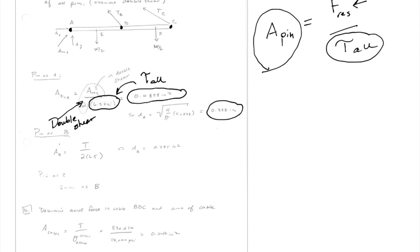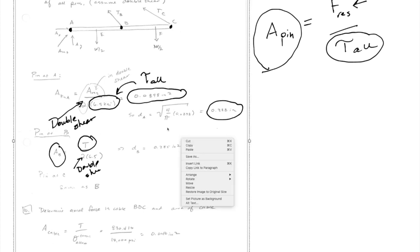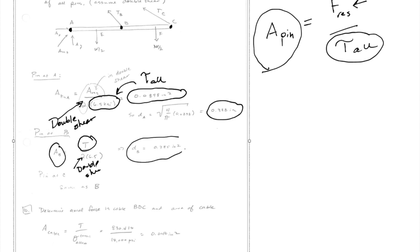Pin at B is very similar. The cross-sectional area is now based on the tension in the cable, again in double shear — that's why we have the factor of 2 — divided by 6.5 ksi, the allowable shear stress in the pins. Pin C is exactly the same as B. So now we've got the sizing of all the pins.